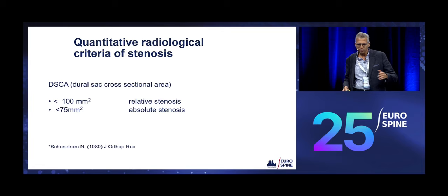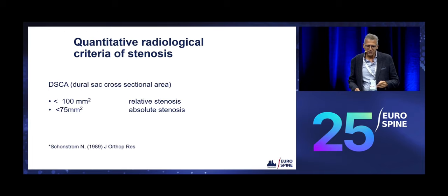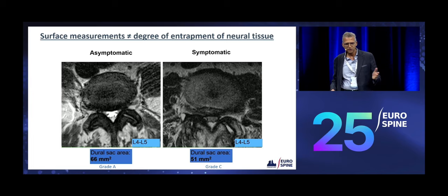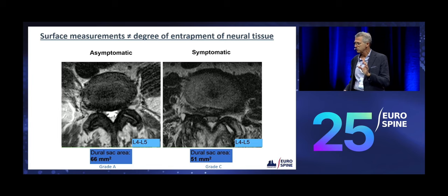Very quickly, for those that have never heard me talking about this subject: usually we use quantitative measures to decide whether the canal is narrow or not, and we have been using the dural sac cross-sectional area for years. Under 100 square millimetres is considered relative stenosis, and below 75 is considered absolute stenosis.